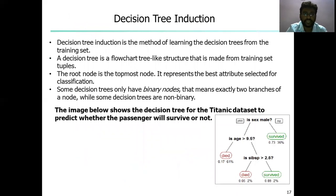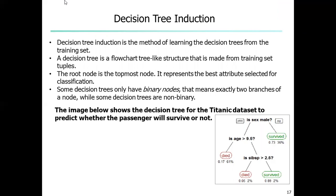What is decision tree induction? Decision tree induction is a method of learning decision trees from a training set. This training set consists of attributes and class labels — each training set will consist of attributes and class labels. The attributes are considered as internal nodes and the class labels are considered as leaf nodes. Applications of decision tree induction include astronomy, financial analysis, medical diagnostics, and manufacturing or production.